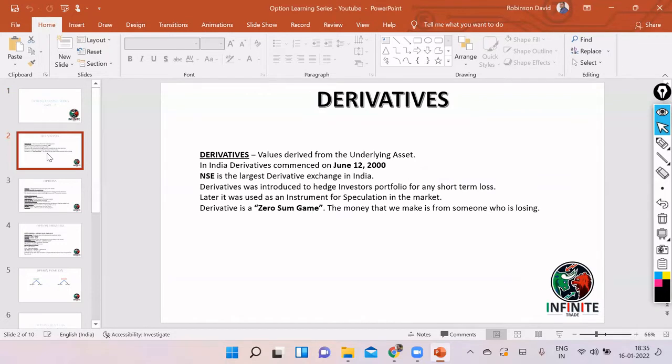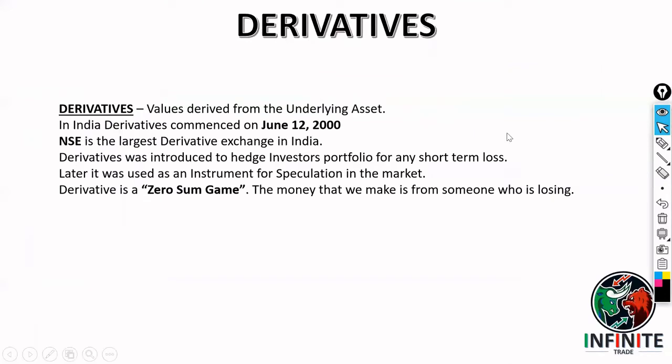So what is derivatives? Derivatives is basically derived from the underlying asset. It is a by-product of an original or actual product. For example, a cow gives milk — milk is the original product, and out of milk we make curd, ghee, butter, and buttermilk. These are derivative or by-products of the original product. Derivatives in India commenced in the year 2000 on 12th June, and NSE is the largest derivative exchange in India.